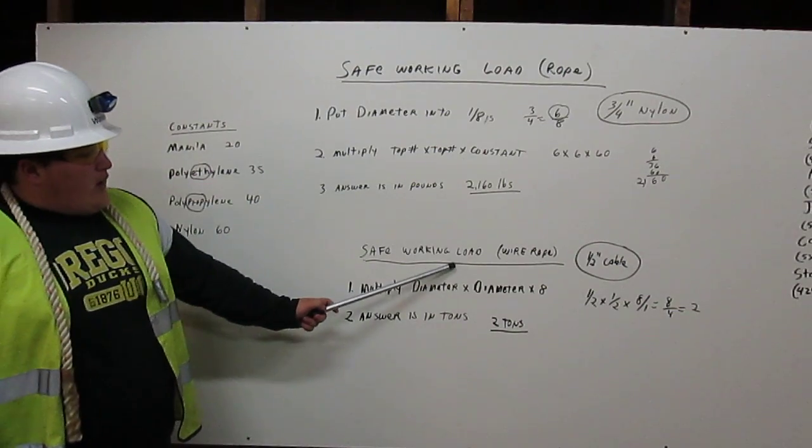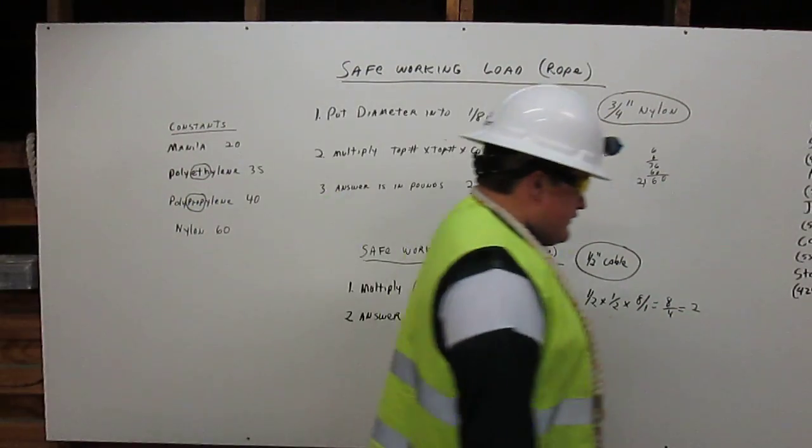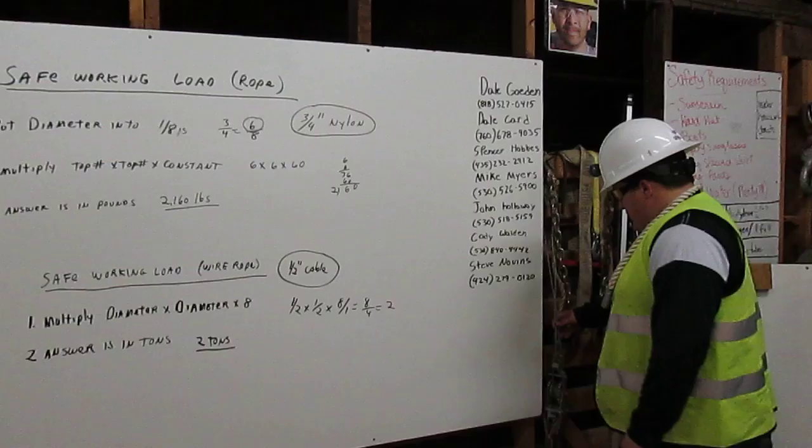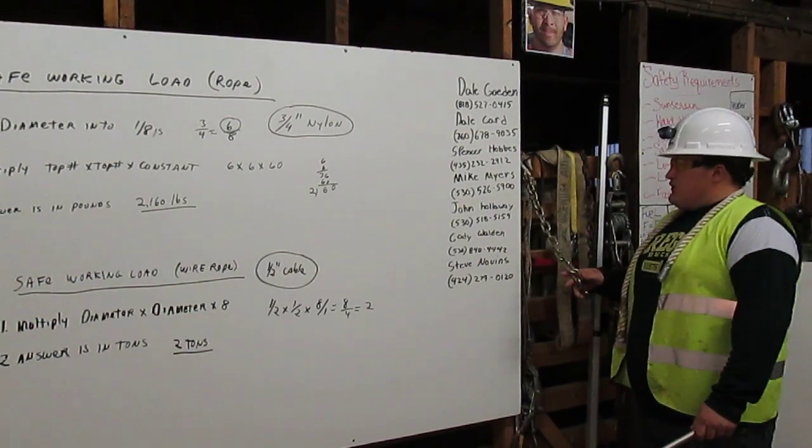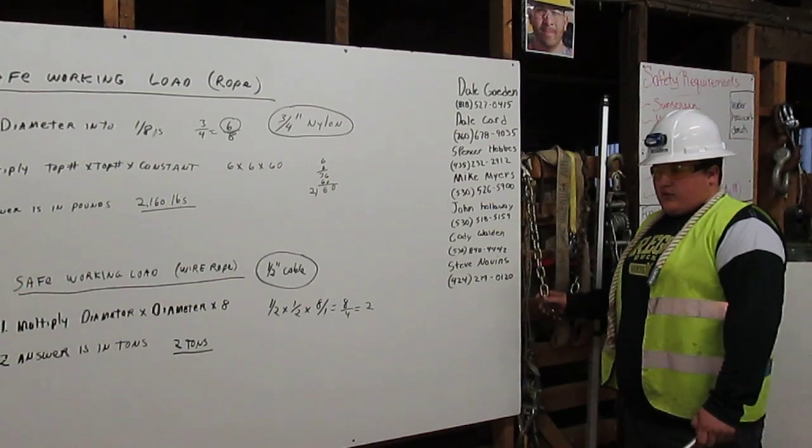Safe working load for wire rope. Cable or wire rope, like this here. And chain is also wire rope, for example, here.